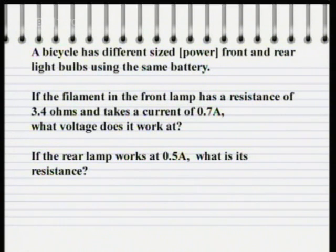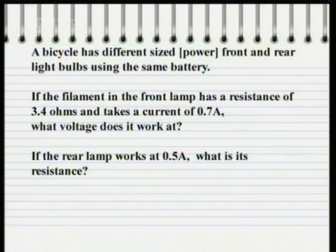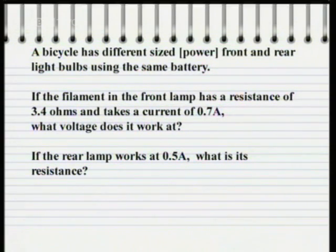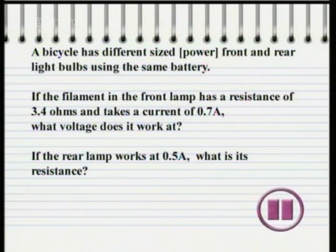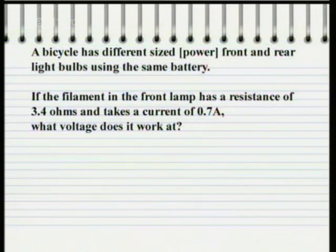Here's a sample question that uses Ohm's law. A bicycle has different size bulbs for the front and rear lights, using the same battery. If the filament in the front lamp has a resistance of 3.4 ohms and it takes a current of 0.7 amps, what voltage does it work at? The rear lamp works at 0.5 amps — what is its resistance? We're told that the current through the front bulb is 0.7 amps and that the resistance is 3.4 ohms.